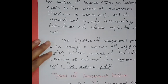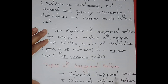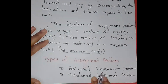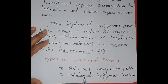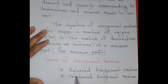There are two types of assignment problems: first is the balanced assignment problem and second is the unbalanced assignment problem. In a balanced assignment problem, the total number of rows equals the total number of columns. In an unbalanced assignment problem, the total number of rows is not equal to the total number of columns. In that case, we add a dummy row or dummy column.